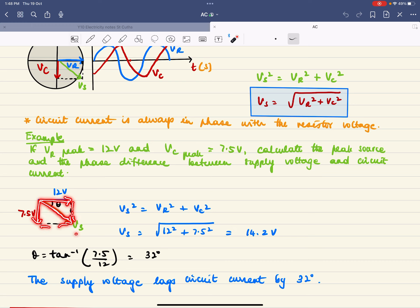The diagonal is your VS, so you get VS is 14.2 volts. The current is always in phase with the resistor, so you need to get that angle—about 32 degrees. The supply voltage lags the circuit current by 32 degrees because everything goes anti-clockwise: this is 1, this is 2, and that is 3 as they go around in a circle.